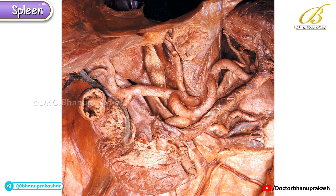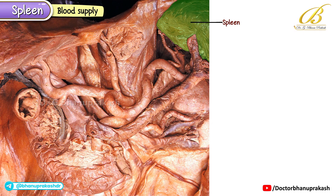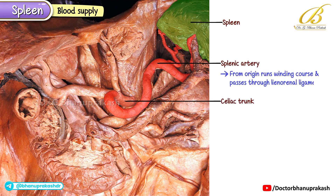Now let's talk about the blood supply of the spleen. The main artery supplying the spleen is called the splenic artery. This is actually one of the largest branches of the celiac trunk. From its origin, it runs a winding course and passes through the lianorenal ligament before reaching the hilum of the spleen.